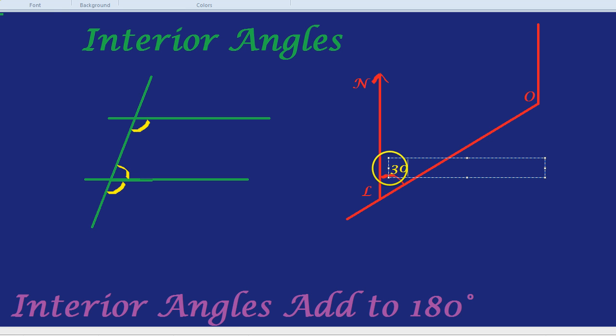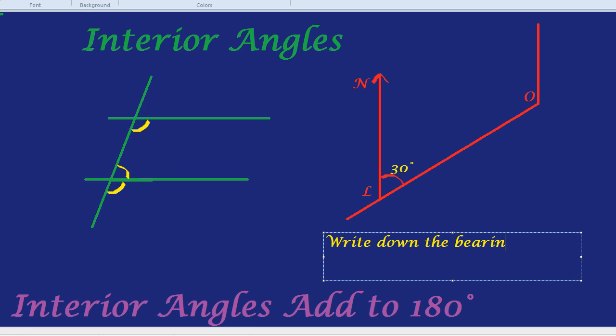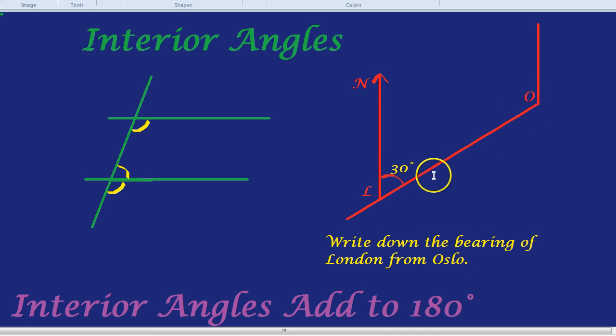All we're told in this question is that the angle here is 30 degrees. And the question they ask is write down the bearing of London from Oslo. You're probably scratching your head and thinking, first of all, I even barely remember bearings, even if I have done it before. And second of all, to do bearings I need some sort of angle. I need a protractor or something. All you've given me is this 30 degrees all the way down here. How can that possibly help?